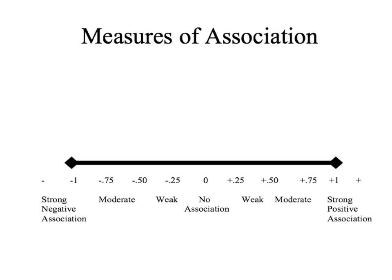If you look at measures of association along a number line, we go from negative 1, a very strong negative association, to 0, which is no association at all, and then continue on the positive side to plus 1, a strong positive association. A negative 1 indicates a 1-for-1 move — every change in the independent variable corresponds to a change in the dependent variable. Moderate is somewhere around 0.75, between 0.5 and 0.75, and weak is around 0.25.